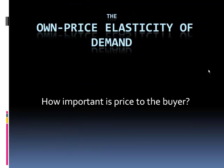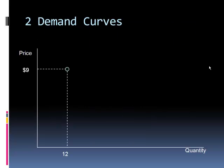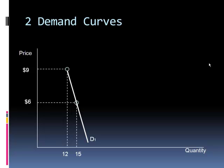Let's take a look at the own price elasticity of demand — the effect of a price change on buyer behavior. On the graph, we have a point on a demand curve: price of nine dollars, quantity purchased is 12. Suppose the price drops to six dollars and the quantity purchased increases to 15 units — those are two points on a demand curve. Connect them, extend the line, and you see a fairly steep demand curve, which we'll call demand curve number one.